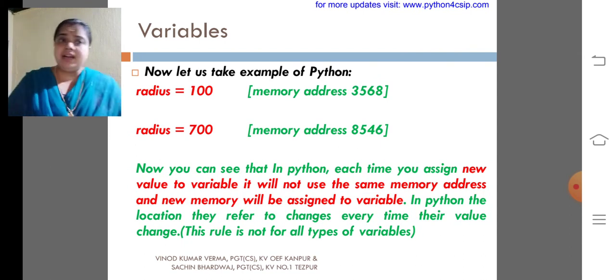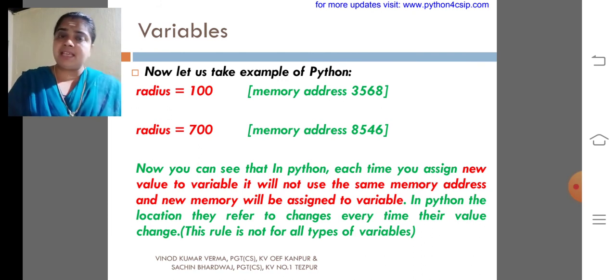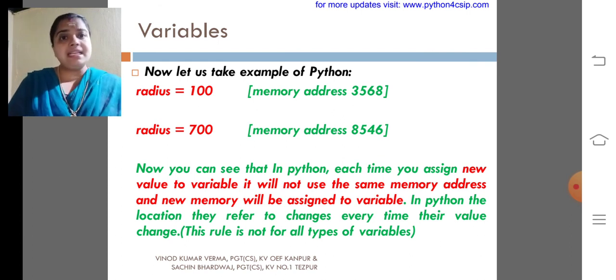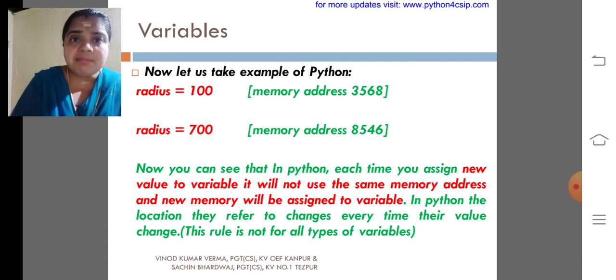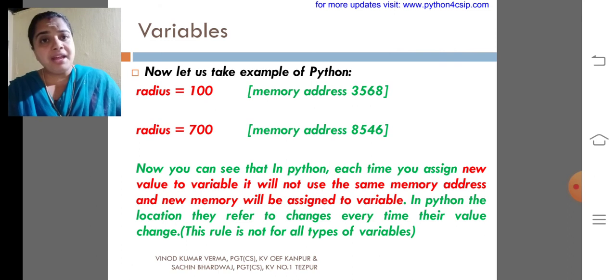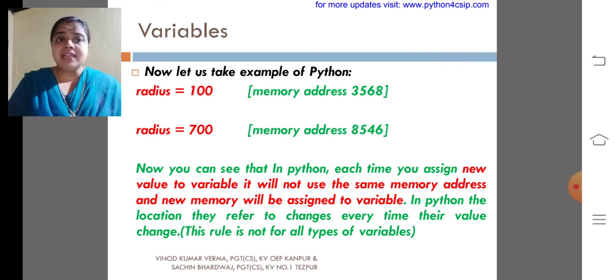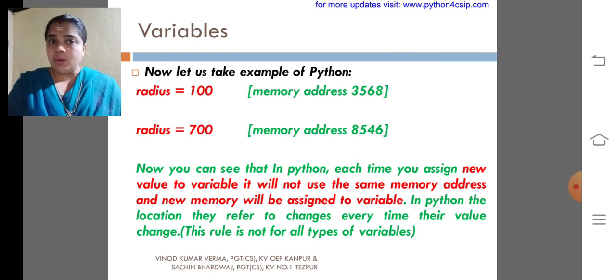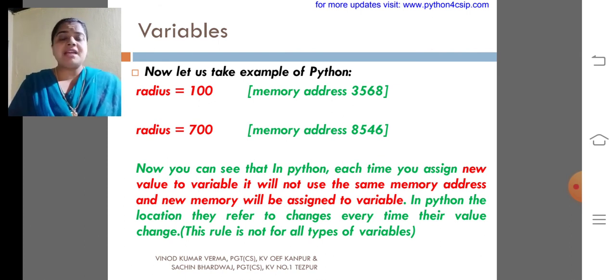Radius equal to 100. The memory address will be 3568. Normally, memory address or memory allocation will be termed in hexadecimal values. Here the memory address of radius and 100 is 3568. Whereas the memory address of 700 is 8546. Now you can see that in Python, each time you assign a new value to a variable, it will not use the same memory address. A new memory will be assigned to a variable.